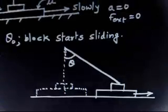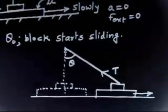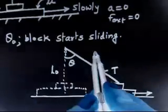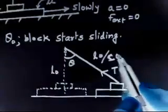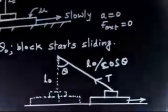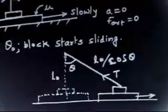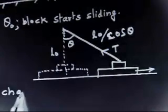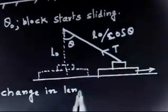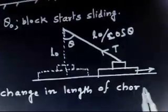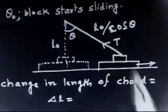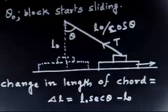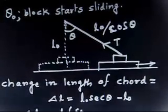There is a force acting — a tension — because the chord is elastic in nature, and there is a friction force. The initial length is L₀, so the current length is L₀ secθ. The change in length of the chord is delta L equals L₀ secθ minus L₀, which gives delta L equals L₀(secθ minus 1).